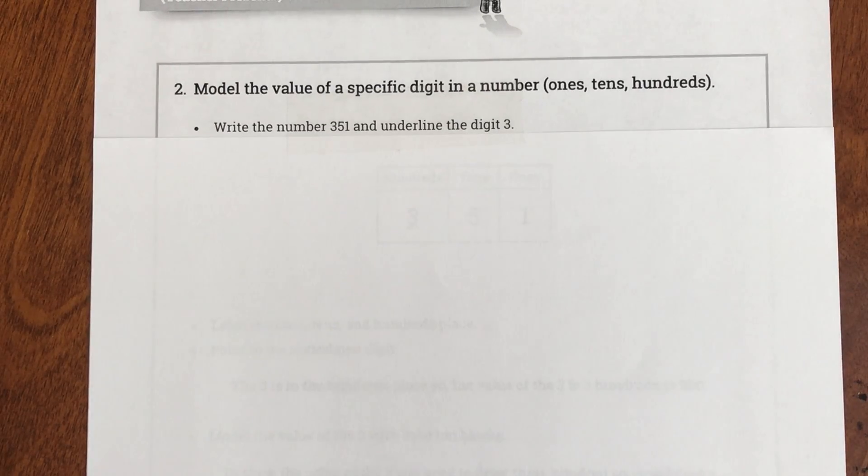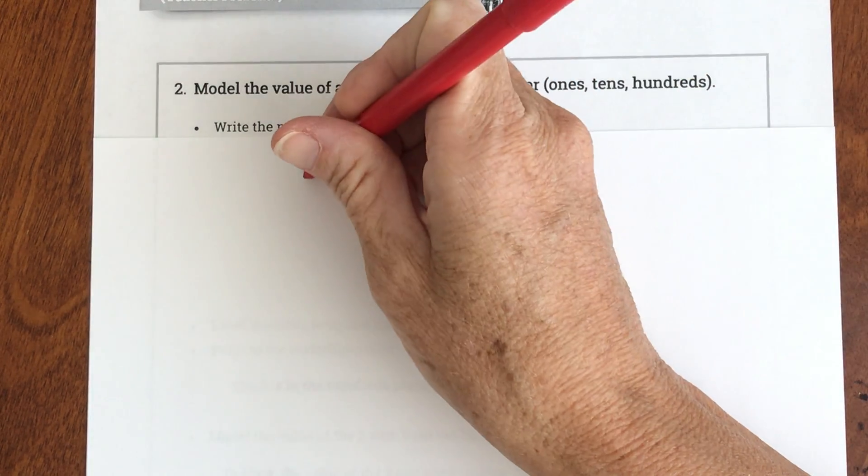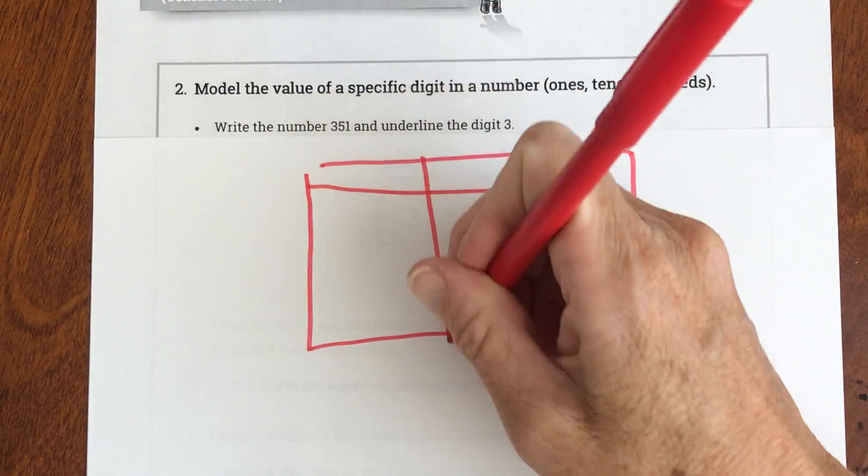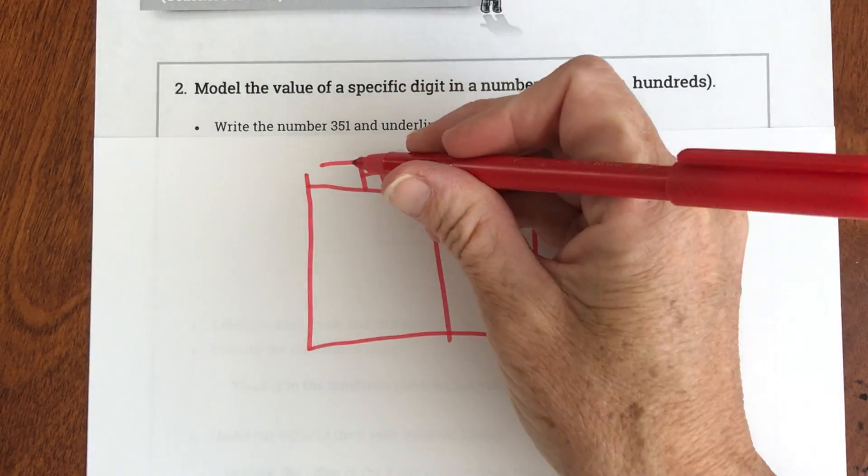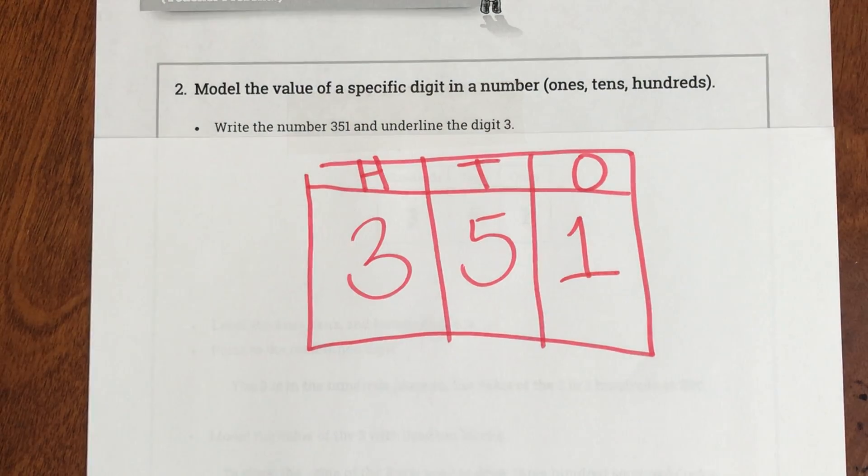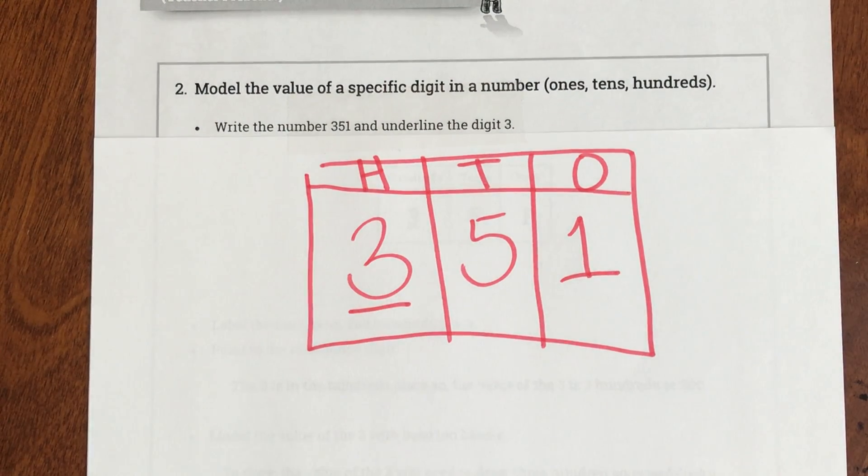Here's my next one. And it says model the value of a specific digit in a number: ones, tens, hundreds. Write the number 351 and underline the digit 3. Okay so step one is I'm going to draw my place value chart. And I have ones, tens, and hundreds. And my number is 351. Okay and they want me to underline the 3. It's my next step.